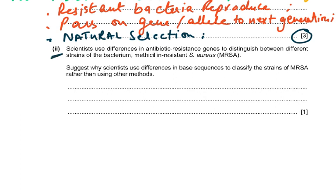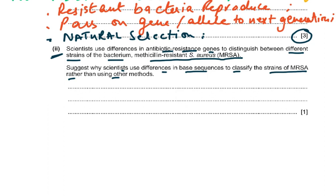Scientists use differences in antibiotic-resistant genes to distinguish between different strains of MRSA — methicillin-resistant Staphylococcus aureus. The question asks why scientists use differences in base sequence to classify strains of MRSA rather than other methods. It is more accurate, and there is no difference in the appearance of the different MRSA strains. We do not need to culture the bacteria — we just do gene sequencing, which is an automated process. Only a very small number of bacteria are needed to find their DNA and base sequence.